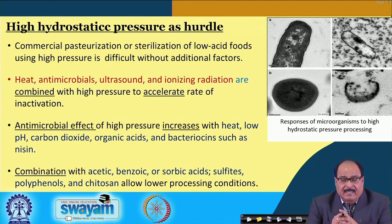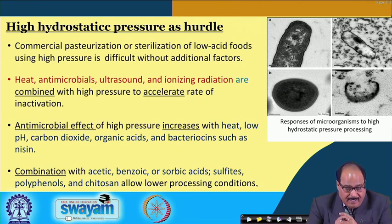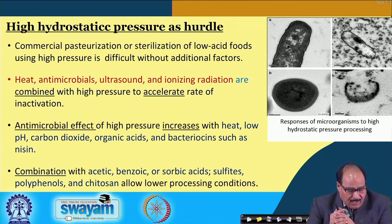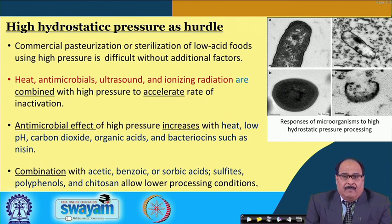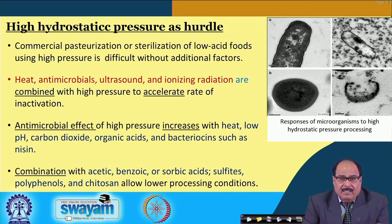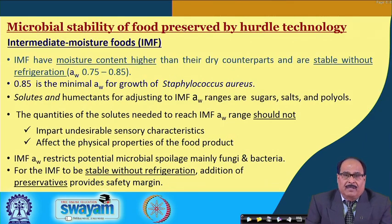The antimicrobial effect of high pressure increases with heat, low pH, carbon dioxide, organic acids, and bacteriocins like nisin. The combination of high pressure with acetic, benzoic, or citric acids, sulfides with polyphenols and chitosans, etc. allows the reduction of processing conditions. Even at lower, less severe process parameters, we can achieve desired or better beneficial preservation effects.